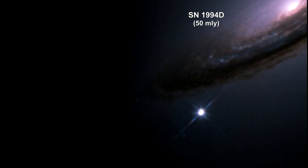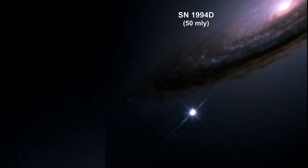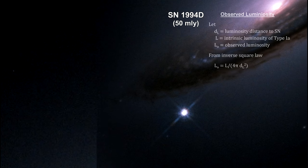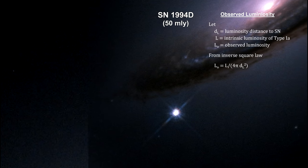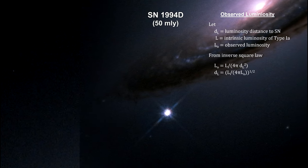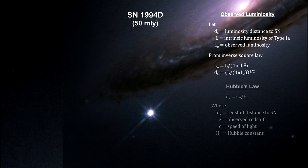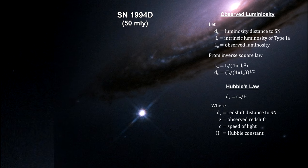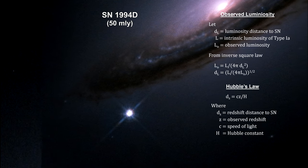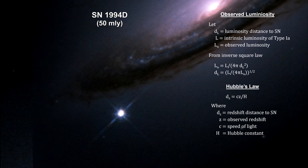Supernovae provide a luminosity reading that enables us to determine their distance via the inverse square law. This distance is called the luminosity distance. Type Ia supernovae also provide a redshift reading that gives us the distance via Hubble's law.